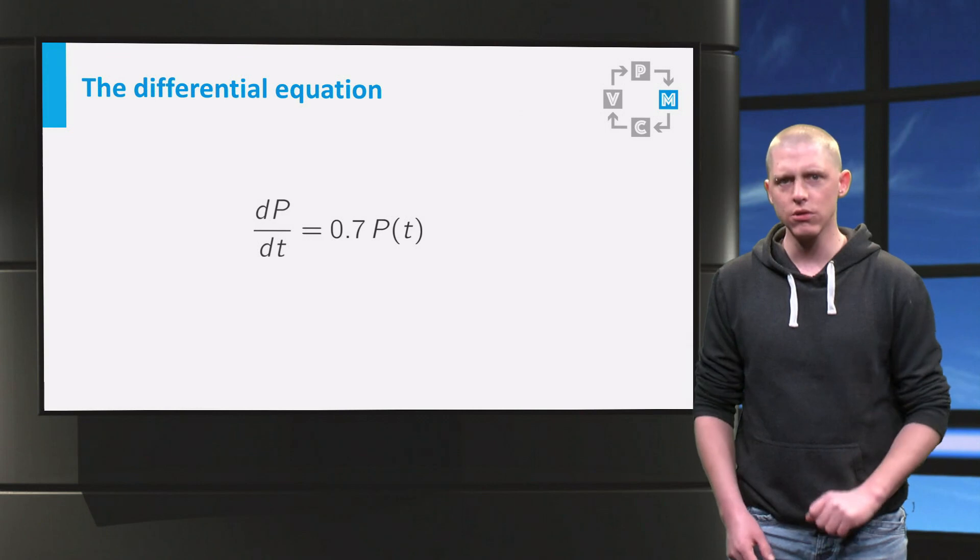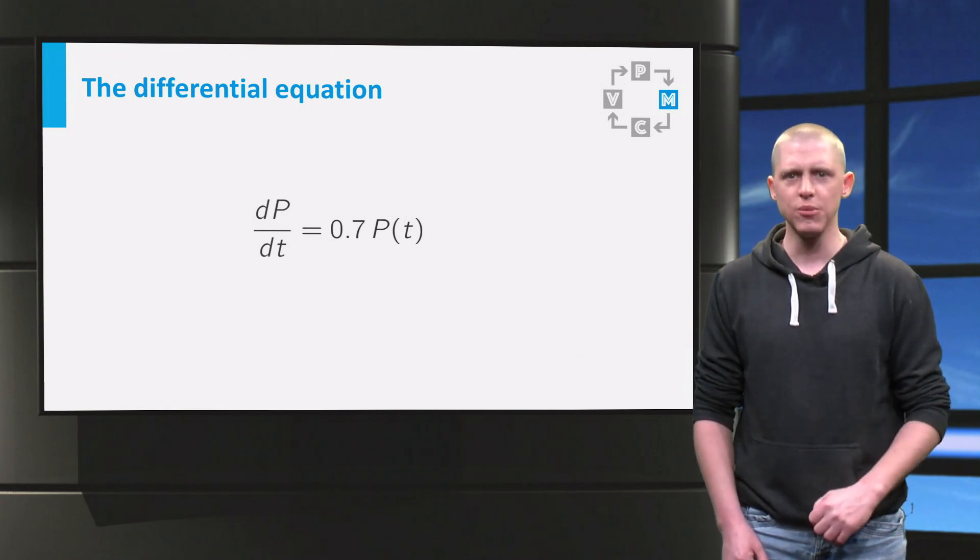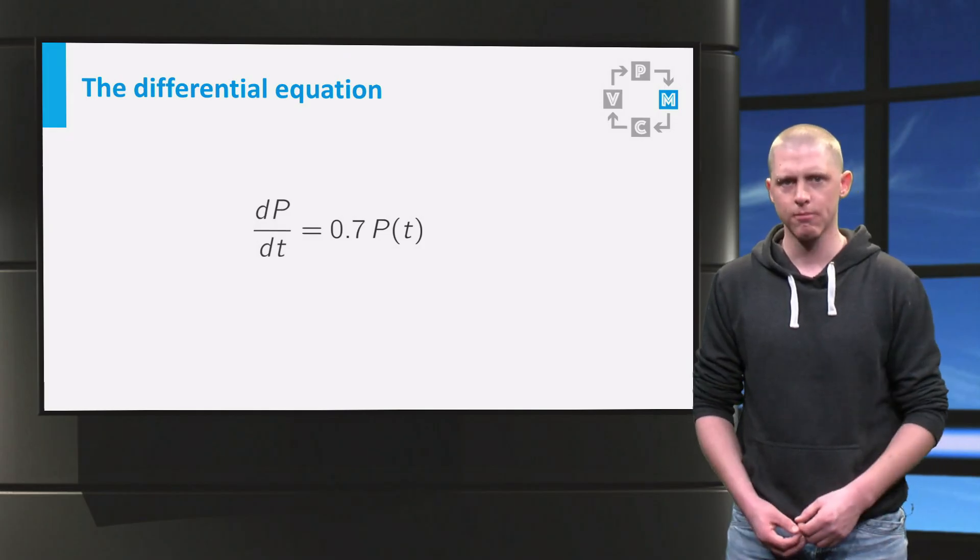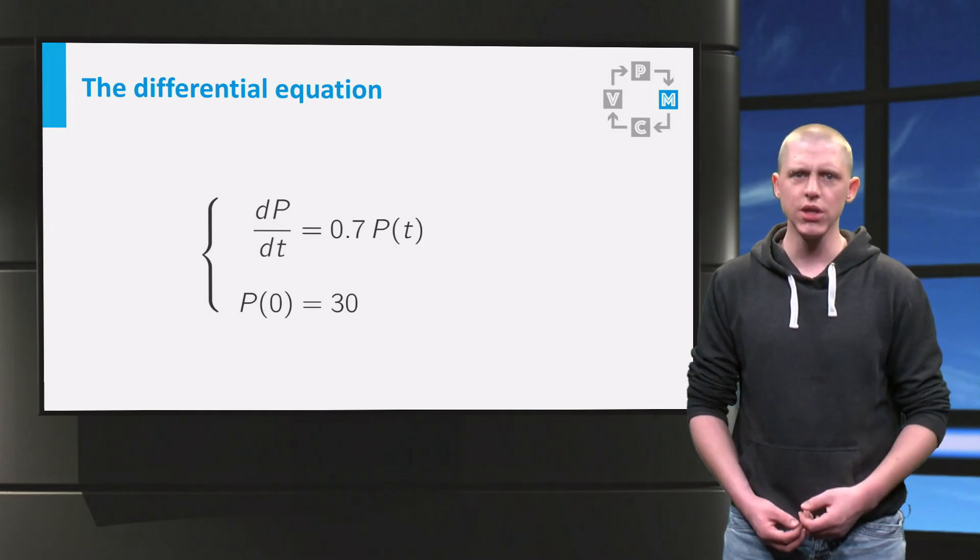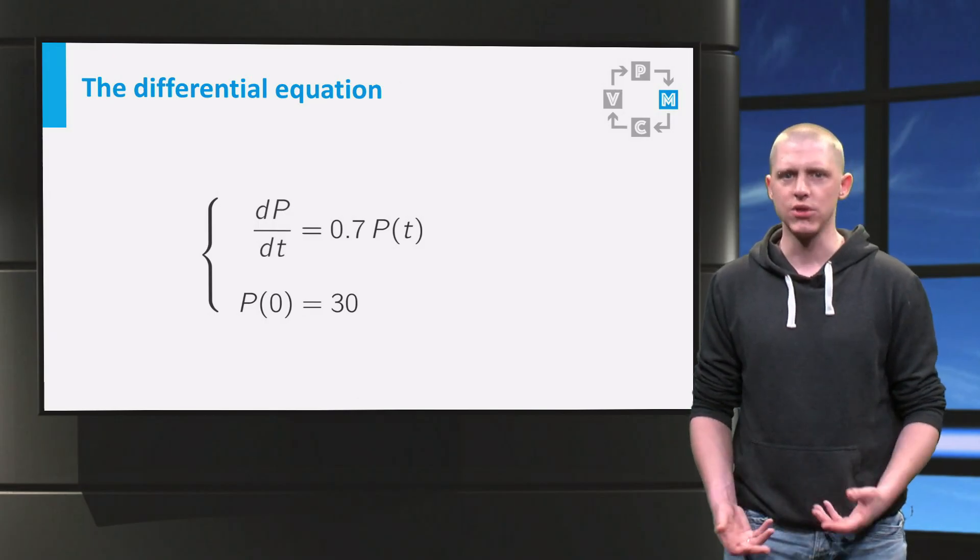The equation only describes how the population changes. So to calculate the size of P itself we need a starting point, the initial condition. Our initial condition is of course that we start with a population of 30 fish at time t equals 0.